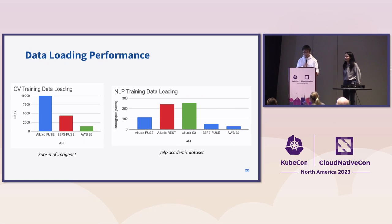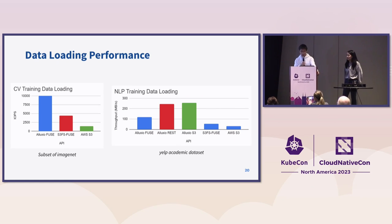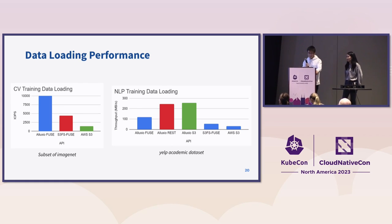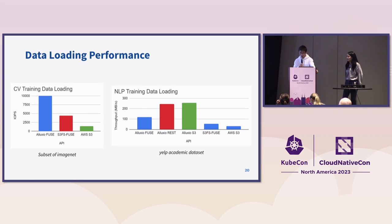We also did a data loading performance test. The first is CV training data loading using a subset of ImageNet. Compared to S3FS FUSE fields and direct reading from S3 with Python Boto3, Luxio FUSE fields has a much higher IOPS. For NLP training data loading using a Yelp academic data set, all three APIs of Alluxio show better throughput than S3FS FUSE fields and AWS S3.